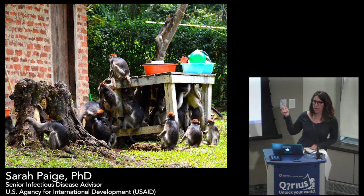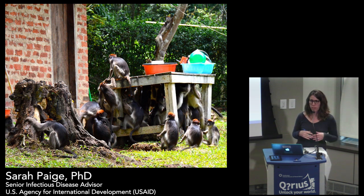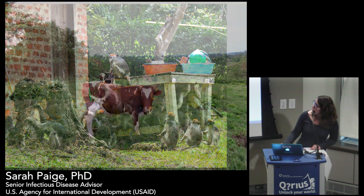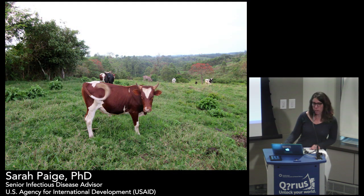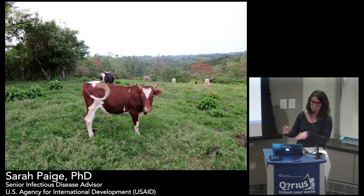We've discovered about 40 new unknown viruses in the red colobus, some from filovirus families, arena viruses, and paramyxoviruses. There's also a picture of cows grazing right next to national parks, demonstrating the proximity between livestock and national parks — and potentially wildlife — bringing the idea of zoonoses from wildlife to livestock to humans and back.